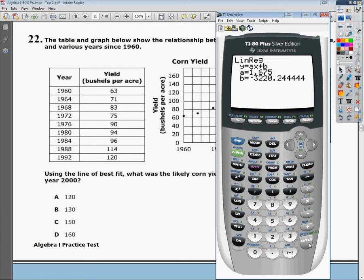So I'm going to hit enter, and it's going to tell me that y equals ax plus b should be written as y equals 1.675x minus 3220.2, give or take.